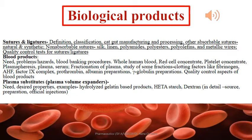Hello everyone. The chapter we are going to talk about now is biological products. It covers three main subtopics: sutures and ligatures, blood products, and plasma substitutes or plasma volume expanders. In this particular lecture we are going to cover sutures and ligatures.